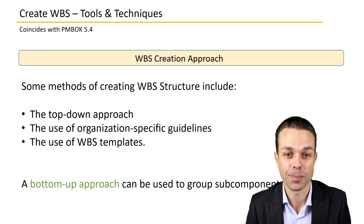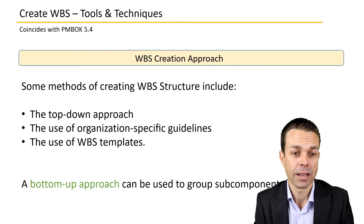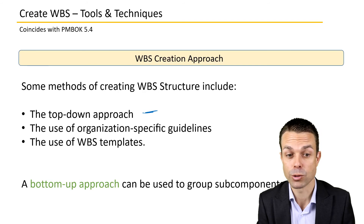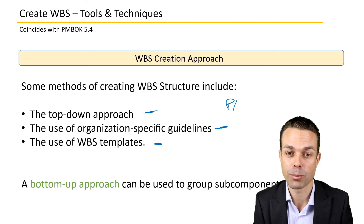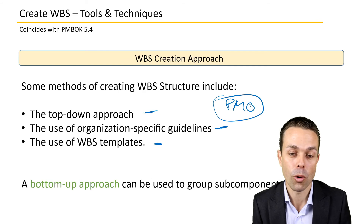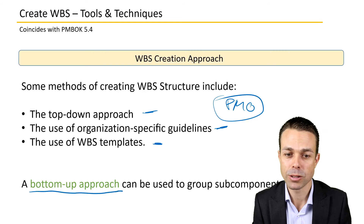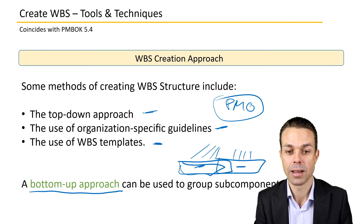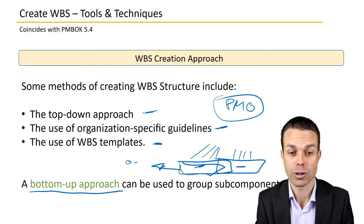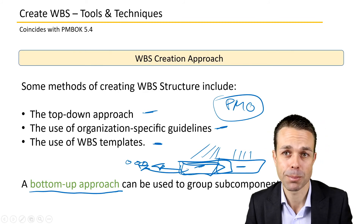Here is an example of a Work Breakdown Structure decomposed down to the work packages themselves — we start with the high-level idea and ultimately end up with something that can be worked on. The WBS creation approach can be done a few different ways: a top-down approach, using WBS templates, organizational-specific guidelines, working with a project management office that has existing guidelines, or a bottom-up approach where you group sub-components to assign them to a particular team.